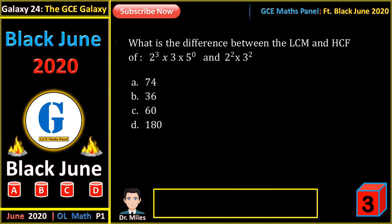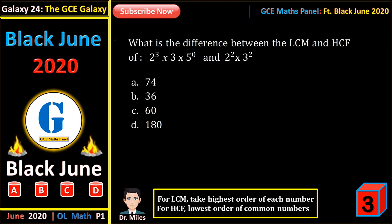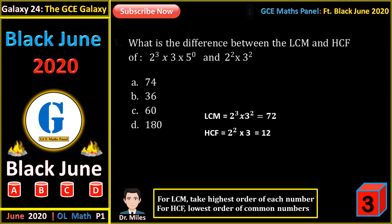What is the difference between the LCM and the HCF of the numbers presented? The LCM is the number with the highest order taken for each factor present. The HCF is the lowest order of the common numbers. So the LCM here is 2 to the power 3 times 3 to the power 2, which is 72. And the HCF is 2 to the power 2 times 3, which is 12. The difference gives us 60.